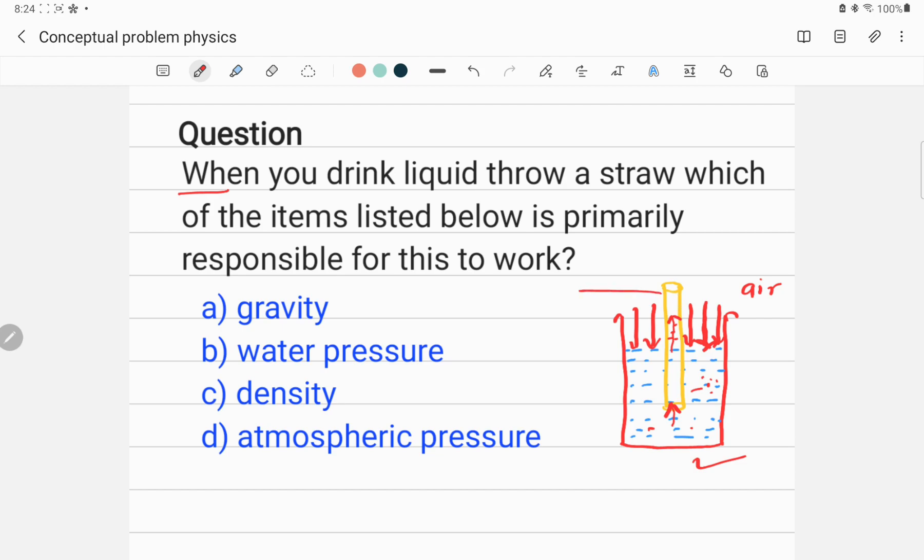Here is straw. If this is a straw, what will happen when you suck on a straw? You expand your lung. Because of that expansion of your lung, it reduces the air pressure inside your mouth. That means inside your mouth, air pressure will be less.